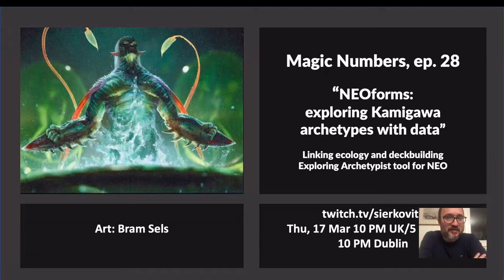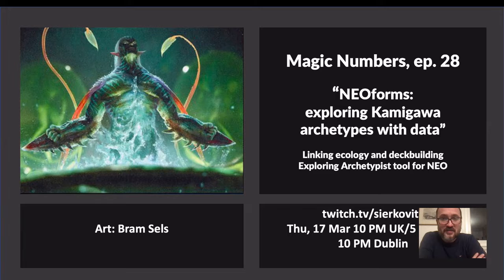Hi and welcome to Magic Numbers. This is episode 28 and today we're going to be talking about Neoforms and we're going to explore the Kamigawa archetypes with draft data. I'm going to basically try to give you my philosophy of how I try to link my job — studying ecology of bacteria — to analyzing the color pairs in Kamigawa Neon Dynasty.